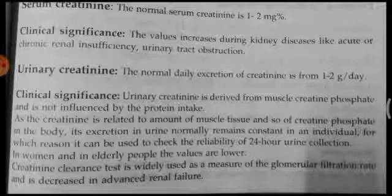Since creatinine is related to the amount of muscle tissue and creatine phosphate in the body, its urinary excretion remains constant in an individual. For this reason, creatinine can be used to check the reliability of 24-hour urine collection. Creatinine levels are measured by the creatinine clearance test, which gives an idea about kidney functioning — the renal function test.